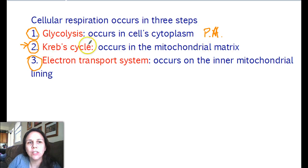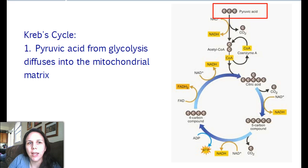Glycolysis we know produces pyruvic acid, and it goes into the mitochondria. The Krebs cycle occurs in the matrix, which is the fluid portion in the middle, and then the electron transport system is going to occur on the inner mitochondrial lining. So let's take a look at the Krebs cycle.